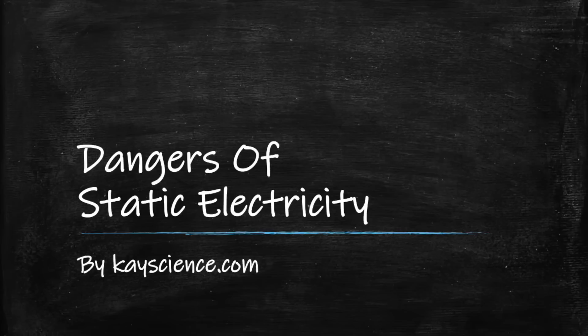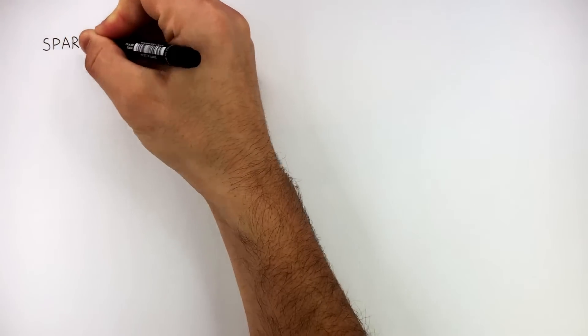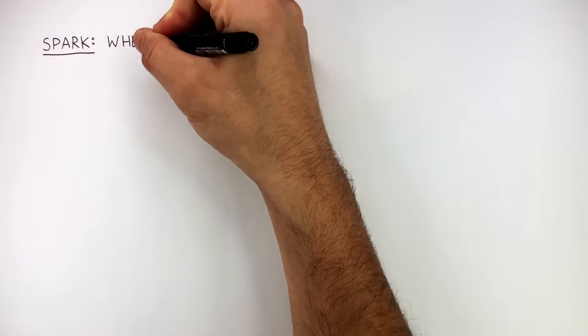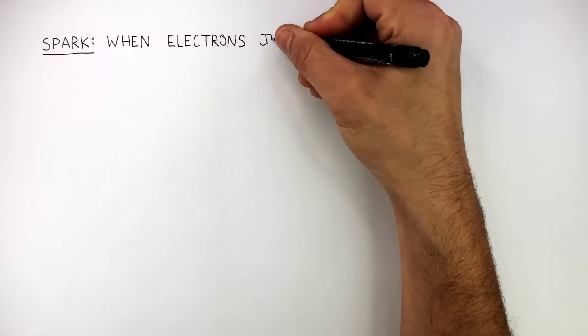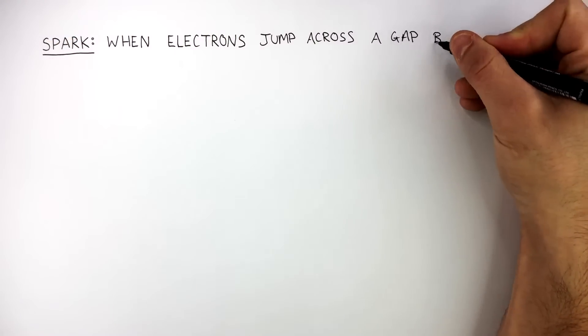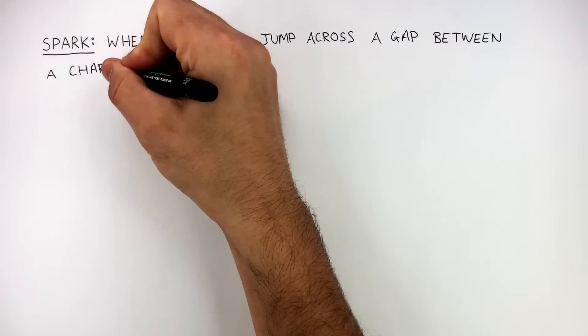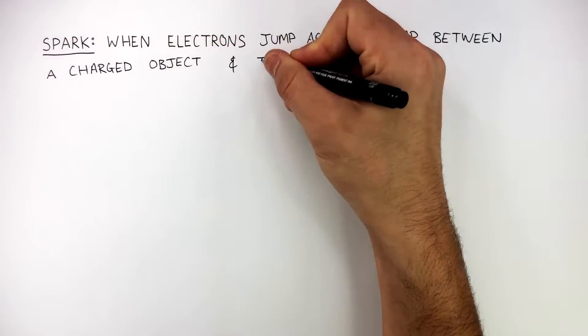Dangers of static electricity by kscience.com. A spark is when electrons jump across a gap between a charged object and the earth.